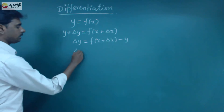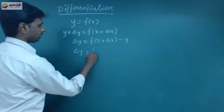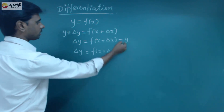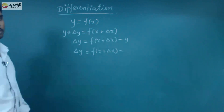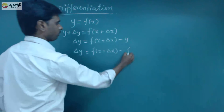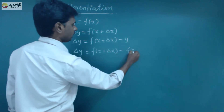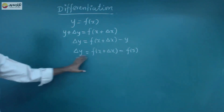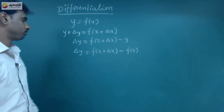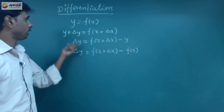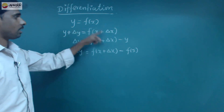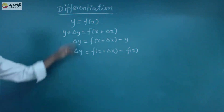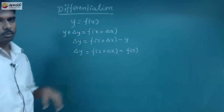So, delta y is equal to f of x plus delta x minus the old value — we need to know the value, we need f of x. So, delta y is equal to f of x plus delta x minus f of x. The change is a function of delta x, and y is equal to f of x.